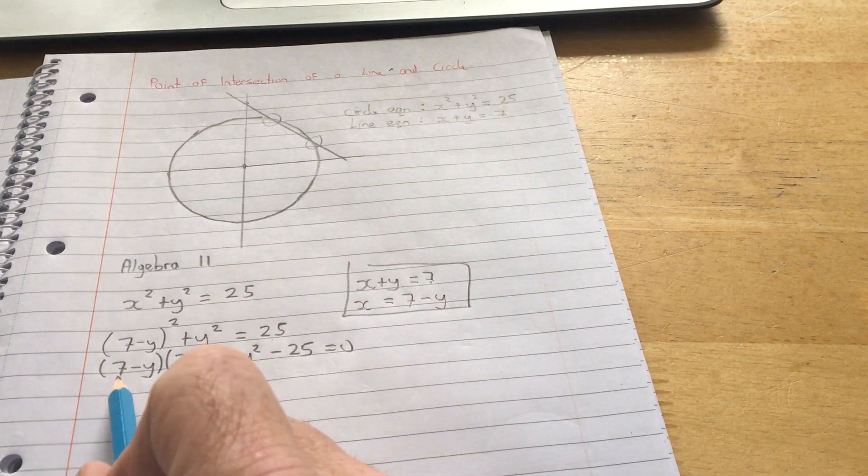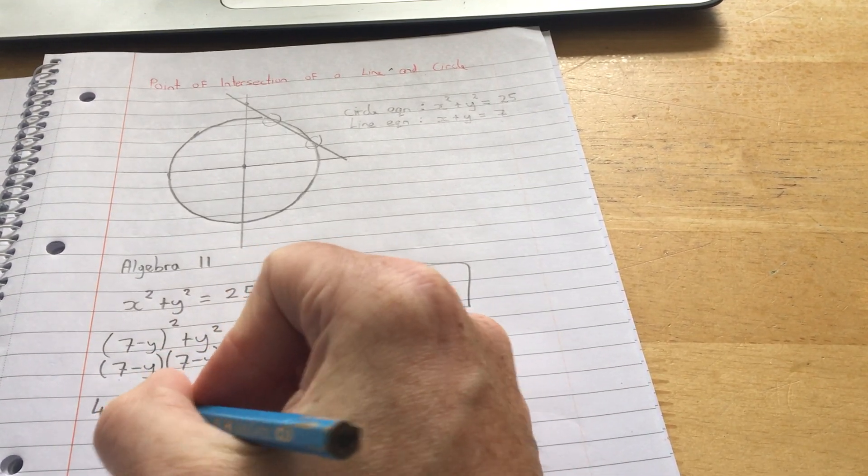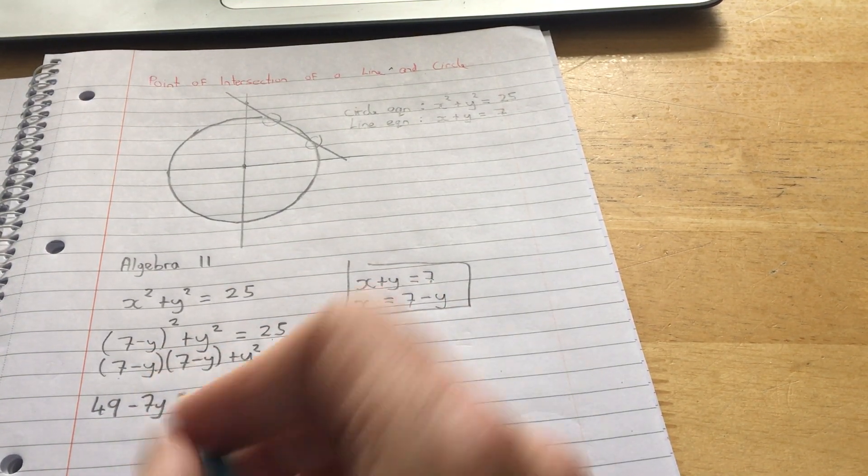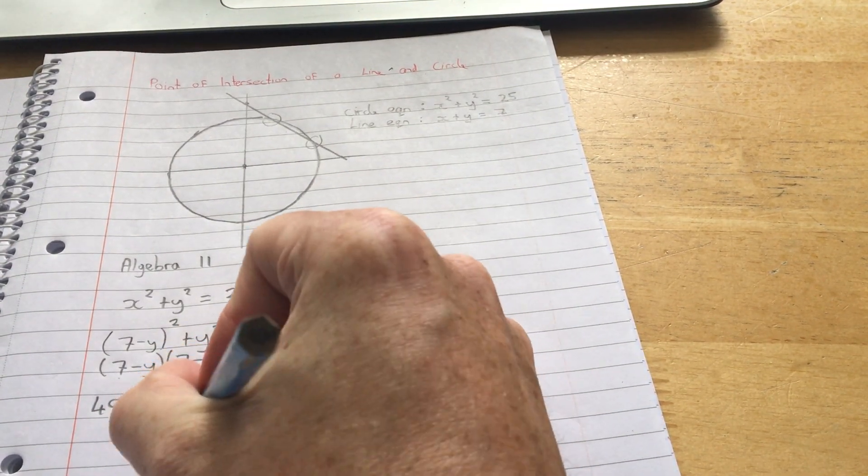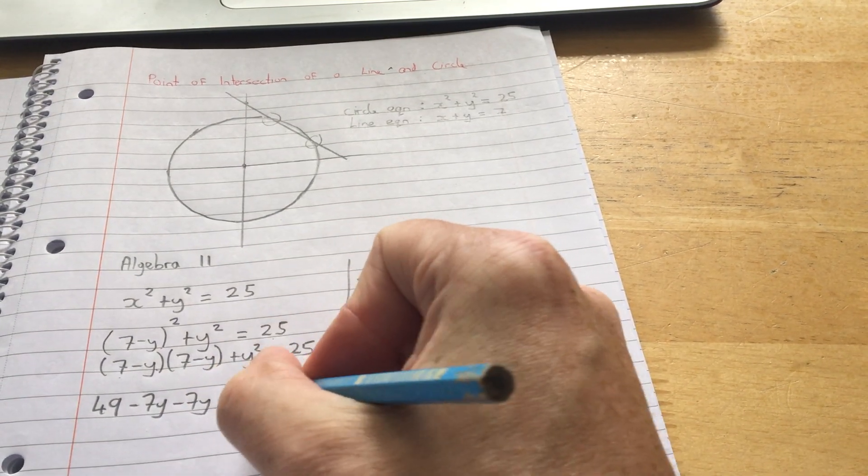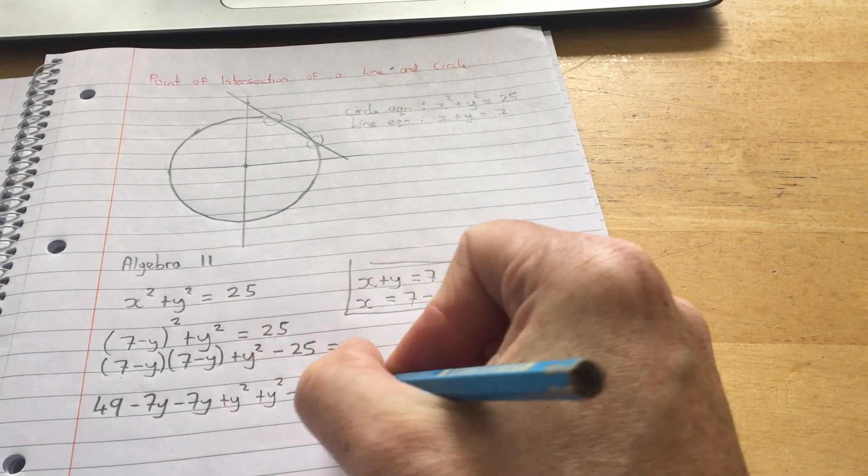Multiplying out brackets. 7 times 7 is 49. 7 times minus y is minus 7y. Minus y times 7 is minus 7y. And minus y times minus y is plus y squared. Then I've also got this y squared minus 25 equals 0.